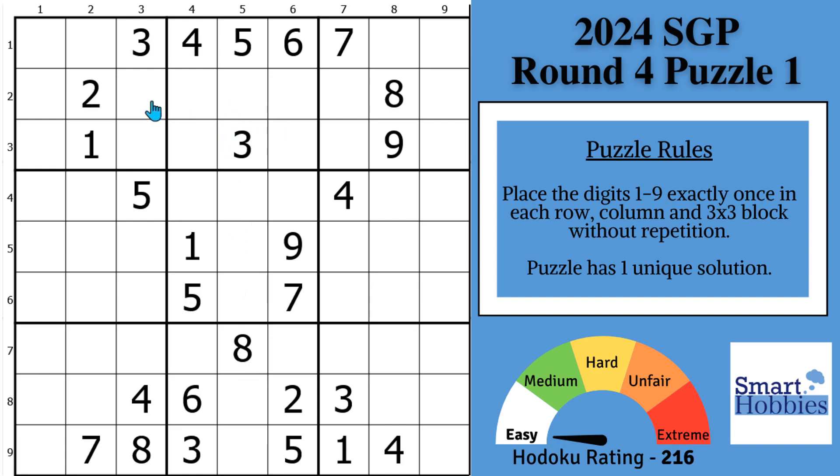Look at where a 2 can go here in block 2. You have this 2 cutting across the row, you have this 2 coming up, only one place for a 2 right there. And I want to show you something.